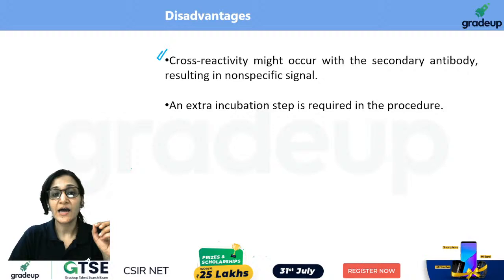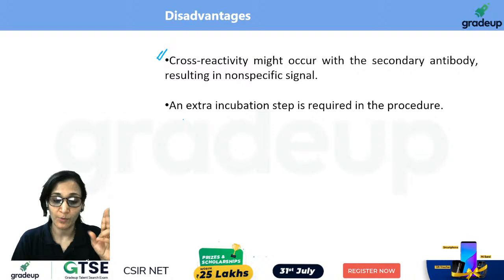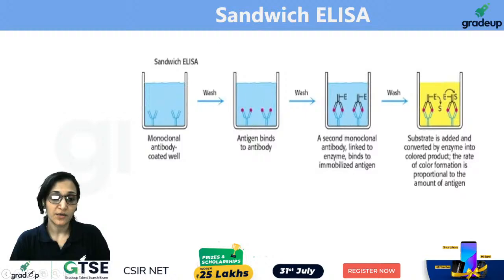Cross reactivity might still occur. There is an additional step compared to Direct ELISA. Instead of one antibody, we have to deal with two different antibodies, which makes it more complex.